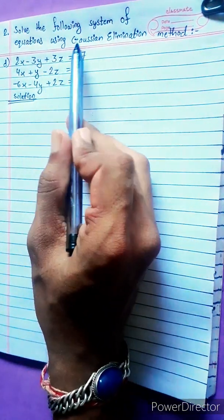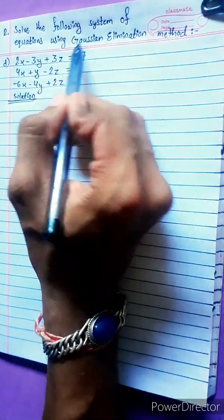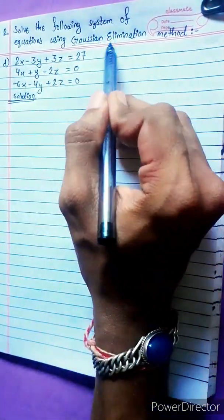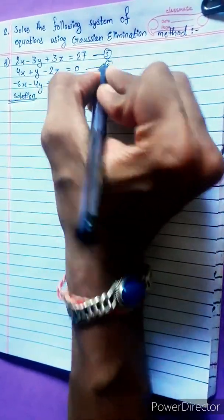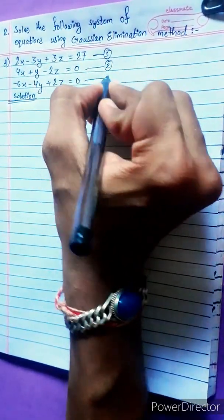Solve the following system of equations using Gaussian elimination method. We have equation 1, equation 2, and equation 3.